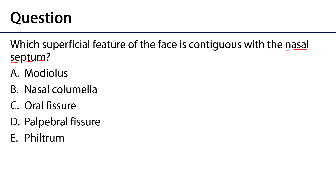Is it the modiolus? No — that's the interdigitation of those perioral muscles. Is it the nasal columella? That's sounding pretty good. Is it the oral fissure? No, that's the mouth. Is it the palpebral fissure? No, that's an eye. Is it the philtrum? No, that's the little indentation on the upper lip — it is adjacent to the feature in question. The answer is the nasal columella: the little bit of fleshy skin between the nares, contiguous with the nasal septum. Thank you very much for your time.